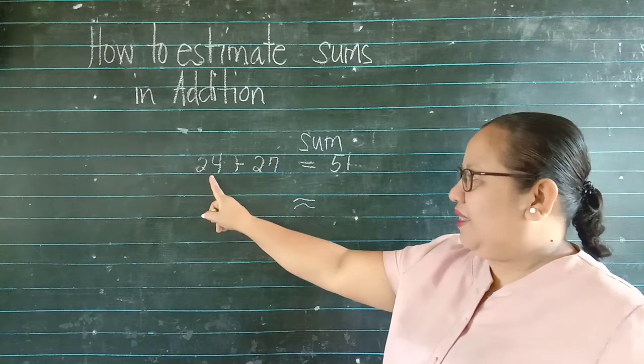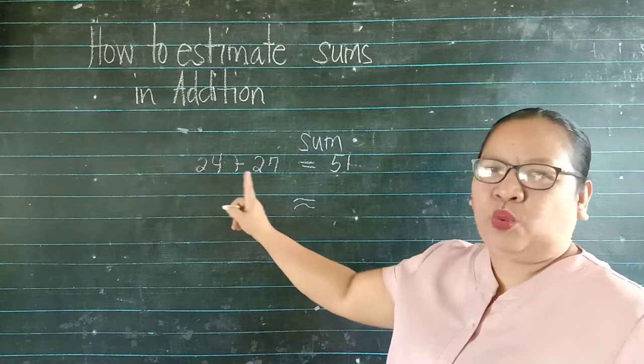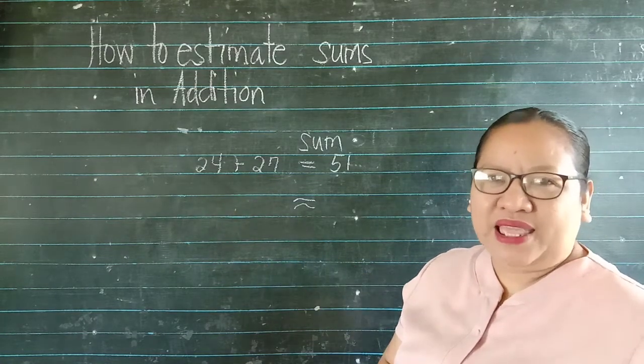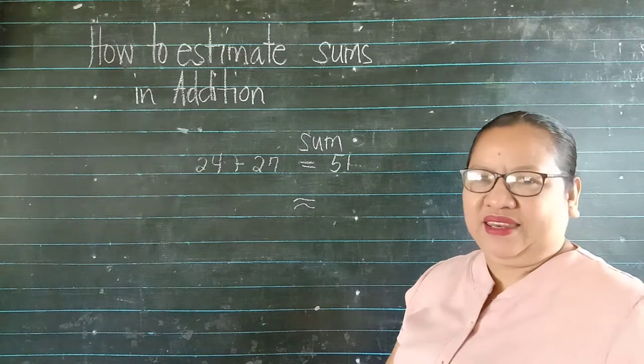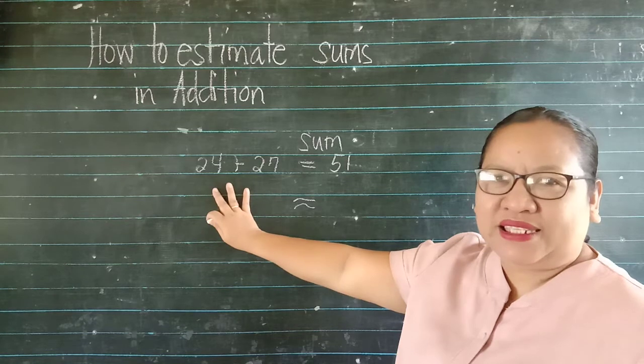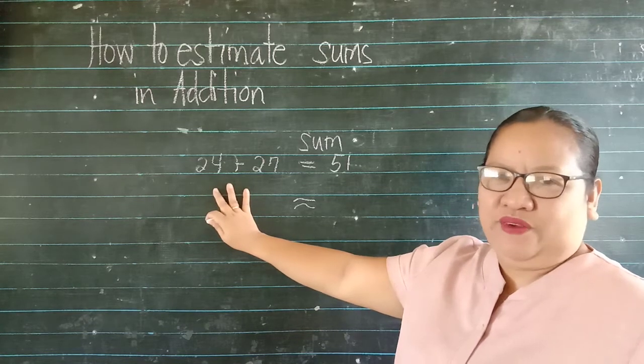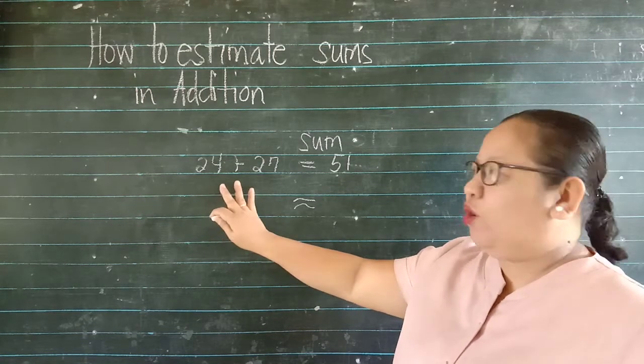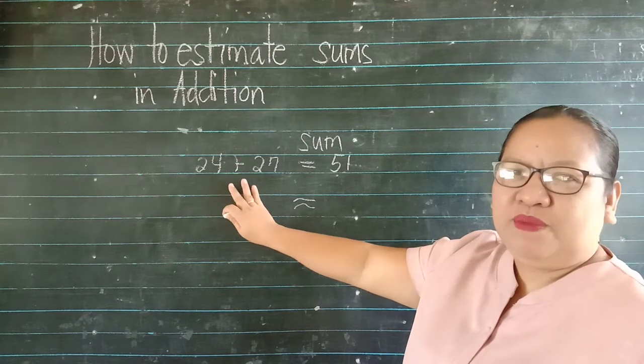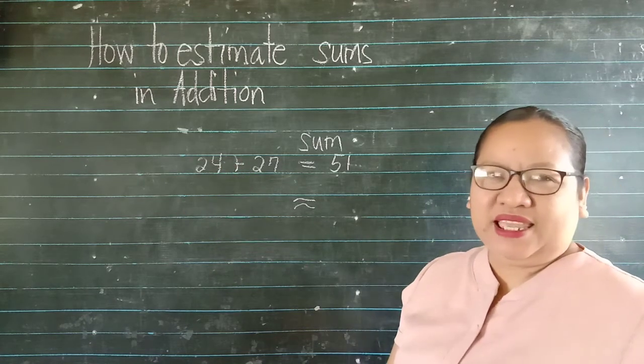Try natin i-estimate ang 24 at 27 to the nearest place value indicated. In this case, anong place value ang pinakamataas dyan? Very good. Tens. So we're going to estimate this number to the nearest tens.